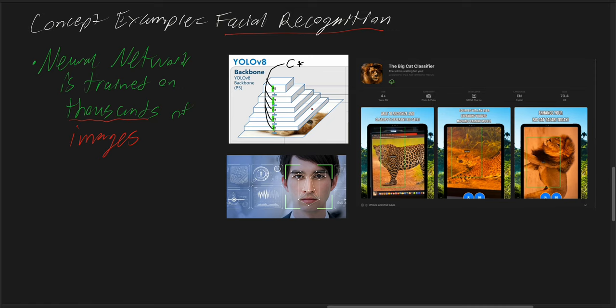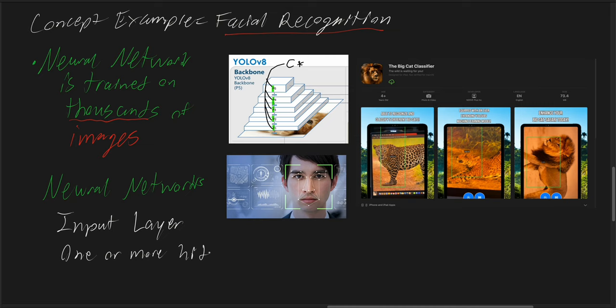Our neural network always has three parts to it: it always has the input layer, one or more hidden layers, and finally the output layer.